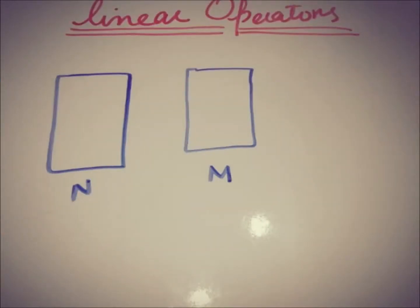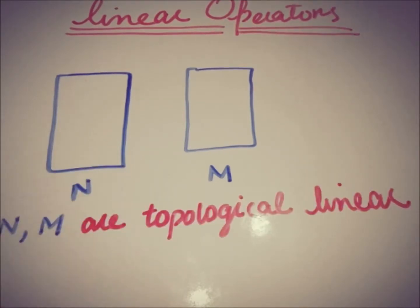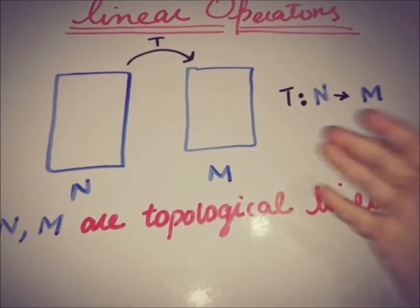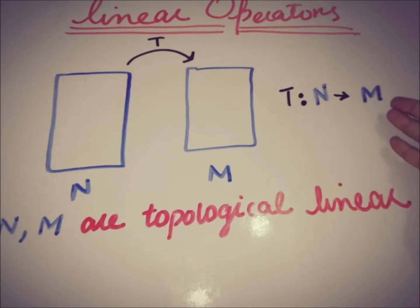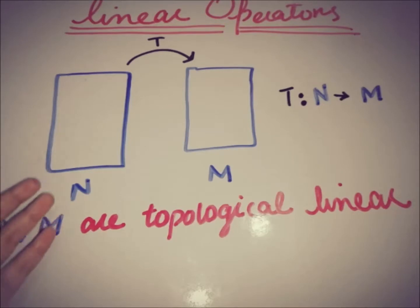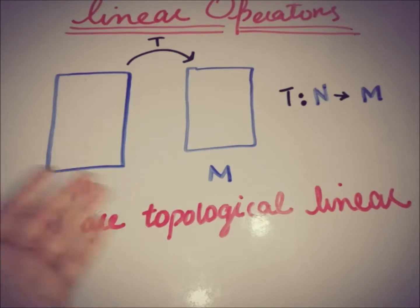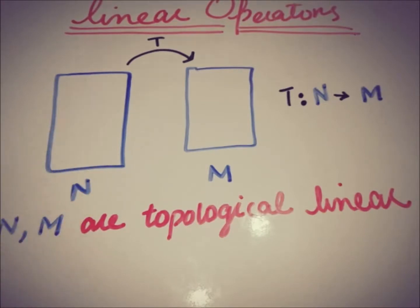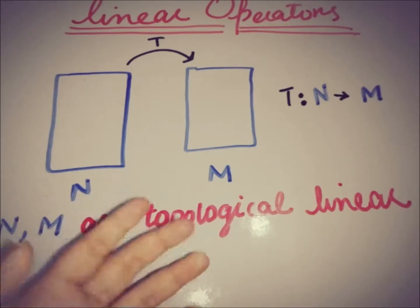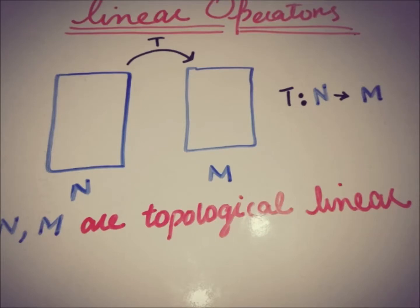If we have two linear topological spaces N and M, and a mapping T from N to M, this mapping from one linear topological space to another is said to be an operator. When defining a function, N and M could be any space — there is no restriction on them being linear topological spaces. But an operator can only be defined when N and M are both linear topological spaces.